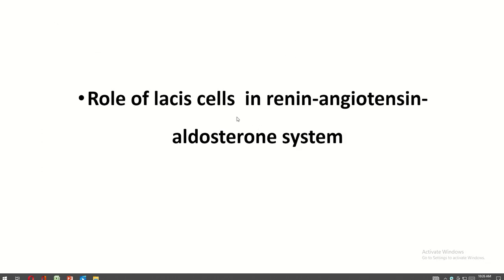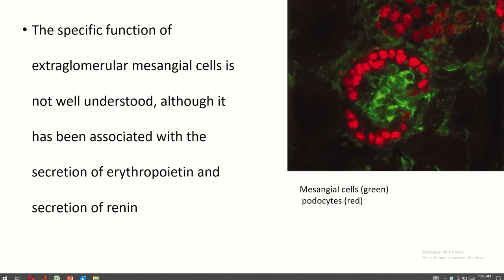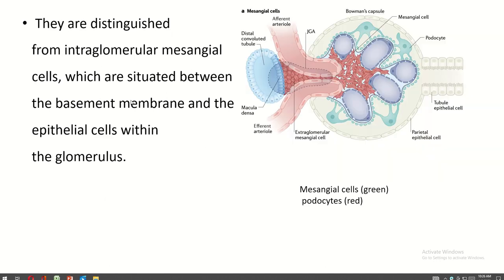The paracrine action of macula densa cell-derived PGE2 causes renin release from the juxtaglomerular cells via the EP4 receptor. Macula densa stimulation is passed through the extraglomerular mesangial cells or lacis cells through gap junctions, which then stimulate the juxtaglomerular cells of the afferent arteriole to secrete renin. The exact function of the lacis cells is not well understood, although it has been associated with the secretion of erythropoietin and renin.